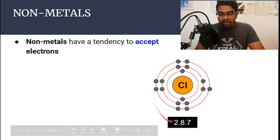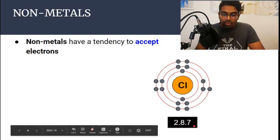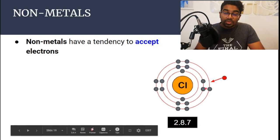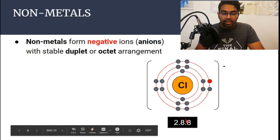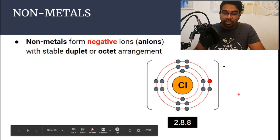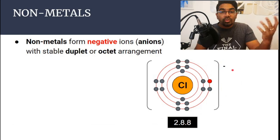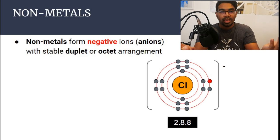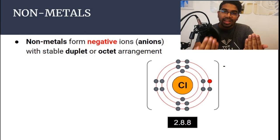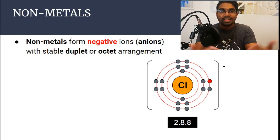Chlorine has the electron configuration 2-8-7. To achieve the octet configuration, it accepts one electron, giving it a 2-8-8 configuration. The chloride ion therefore has a charge of −1. So we have metals forming positive ions (cations) and non-metals forming negative ions (anions). The electrostatic force of attraction between the positive ion and the negative ion is what is known as the ionic bond.